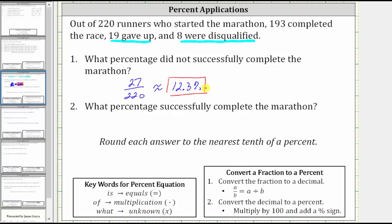Now for number two: what percent successfully completed the marathon? Each runner either completed the marathon successfully or not successfully. Therefore, the easiest way to determine the percent that completed successfully would be to take 100%